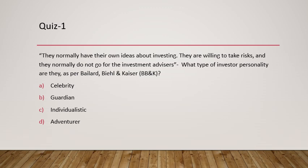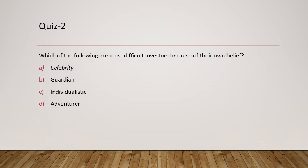In the BB&K model, five types of investors have been discussed and you are going to see questions on all five of them. The next question asks: which of the following are the most difficult investors because of their own belief? The four categories mentioned are adventurer, individualistic, guardian, and celebrity. The answer is celebrity — investors who have their own belief tend to be very difficult to handle.